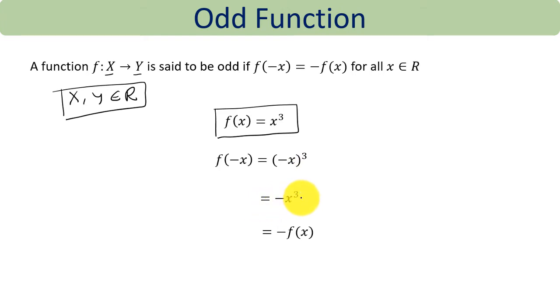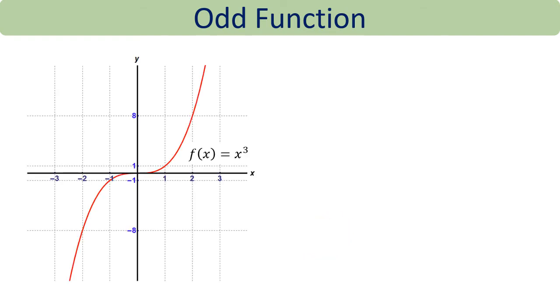negative x³. We can write this as -x³, and we know that f(x) = x³, so we can write this as -f(x). Therefore, f(-x) = -f(x), hence f is an odd function. Now let us understand this graphically.